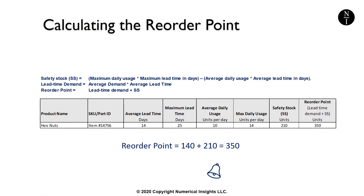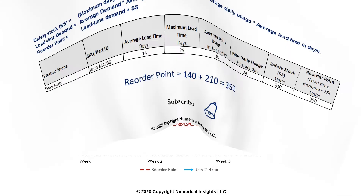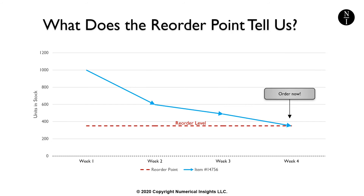But what does the reorder point tell us to do? This value says that when our inventory level reaches 350, it's time to place another order with our supplier. The 350 units we have at the time we place our order are the number of units we'll use while we wait for another delivery, plus some buffer to deal with unpredictable variation.